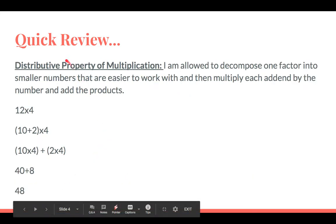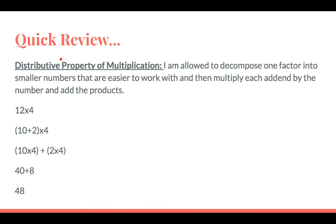The next vocabulary word is the distributive property. This is the one where I decompose one of the factors — decompose means break apart. I'm allowed to break apart one of my factors into smaller numbers that are easier to work with. Once I decompose that factor, I'm going to multiply each of those numbers by the other factor and then add my products together.